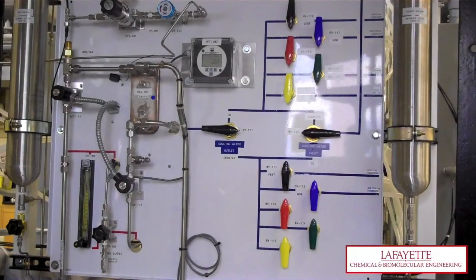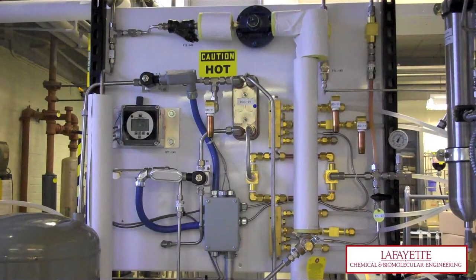The valves that operate the cooling water are located on the back panel of the structure. Before the cooling water is turned on, the system must be drained from the previous operation.